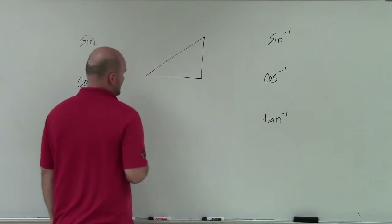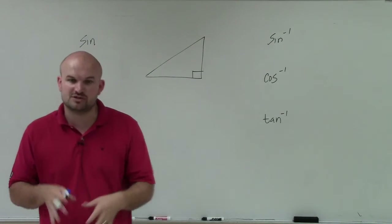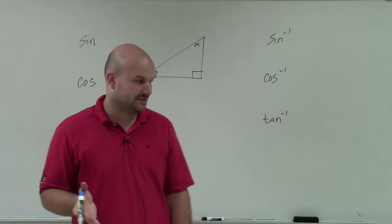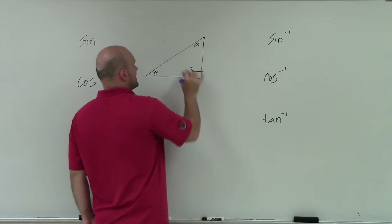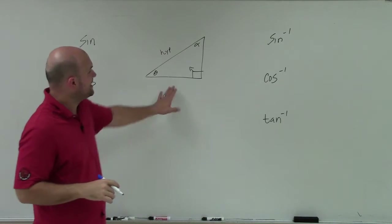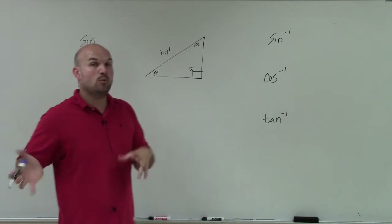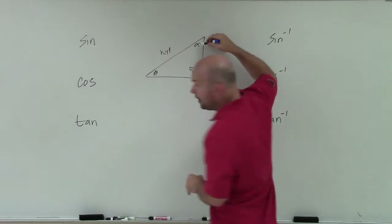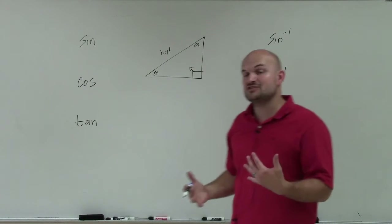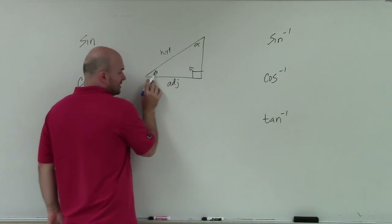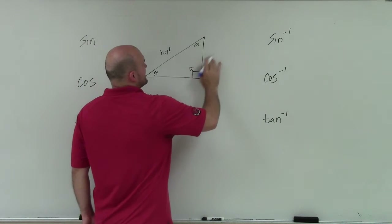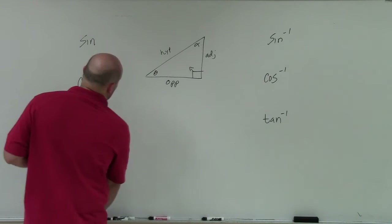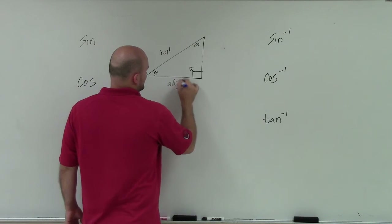I'm going to use a typical right triangle. All trigonometric functions we'll be using involve a right triangle. There are two other angles — I'll use theta and alpha. On this triangle, we have a hypotenuse directly across from the right angle, and two other sides. Depending on which angle we're referring to, one side is adjacent and one is opposite. The adjacent side is always between your angle and the 90-degree angle. So for theta, the side between theta and 90 degrees is adjacent, and the other side is opposite. For alpha, those labels swap.